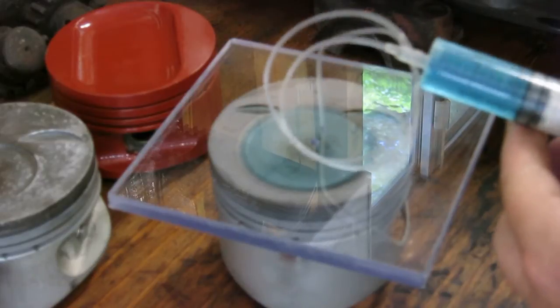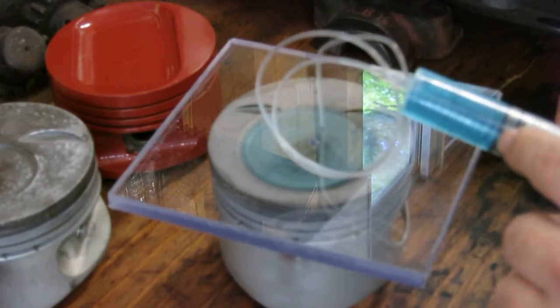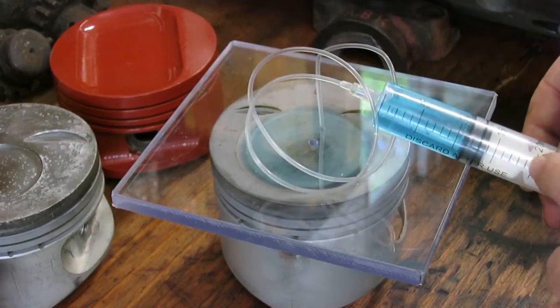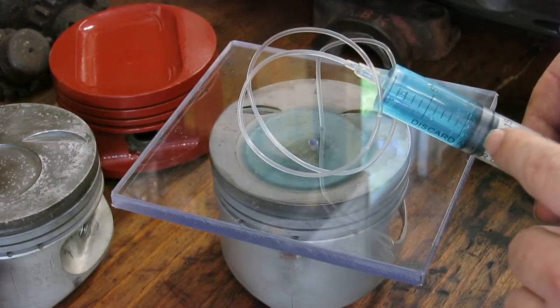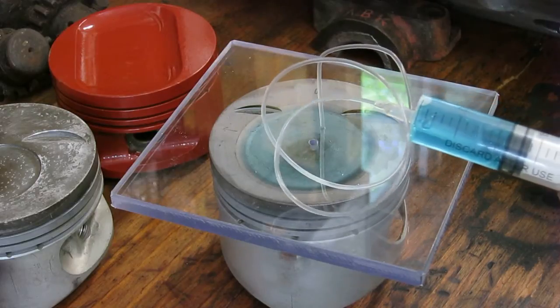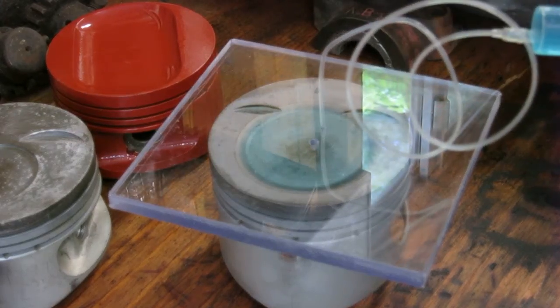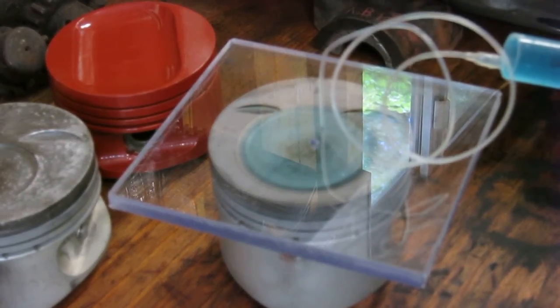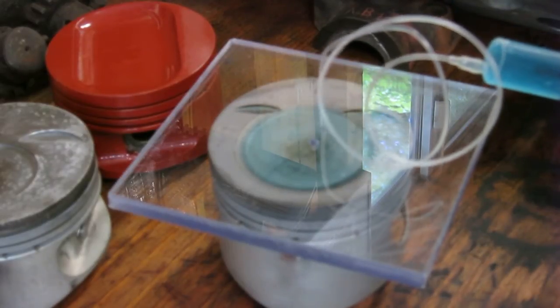So I can look at my syringe, it is currently now at 11 cc's. So we want five, six, seven, eight, nine. So the volume of this piston is nine cc's.